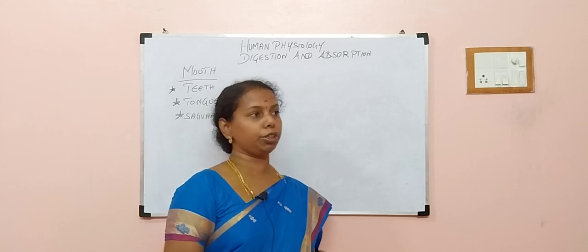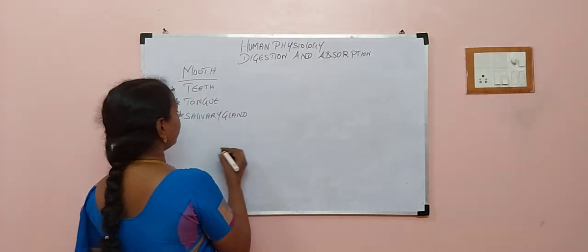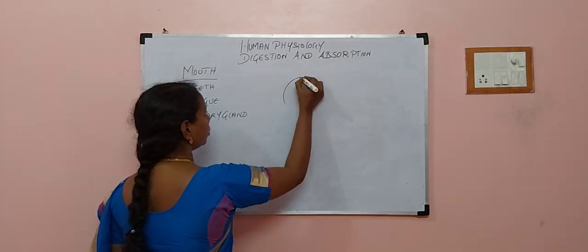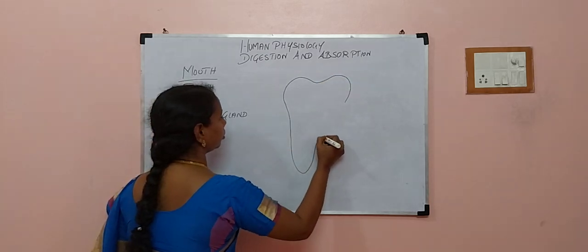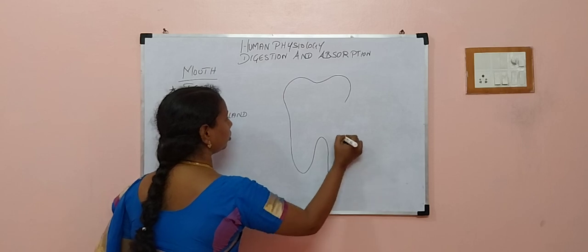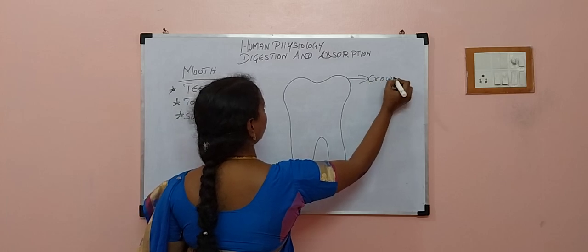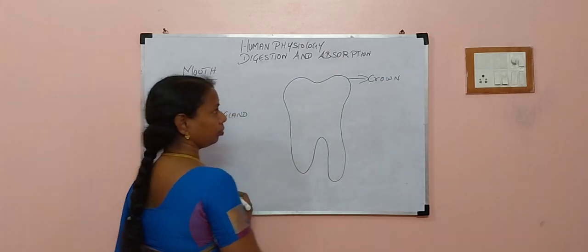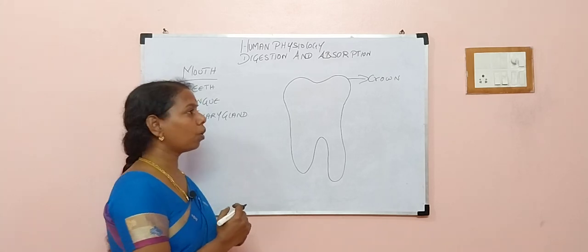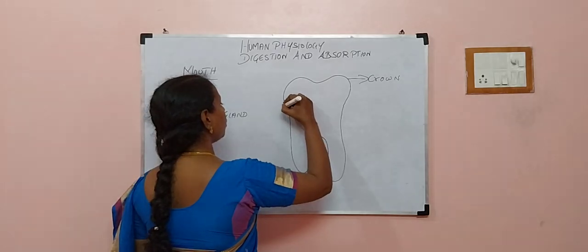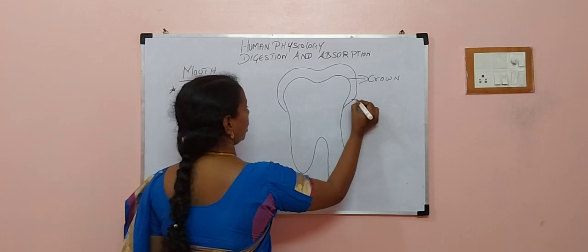Now, so teeth. Let us discuss. As you all know, the teeth structure is having three parts. The first part we call it as crown, which is also visible from outside. And you know the crown is covered by the hardest substance of the human body, of course, enamel.